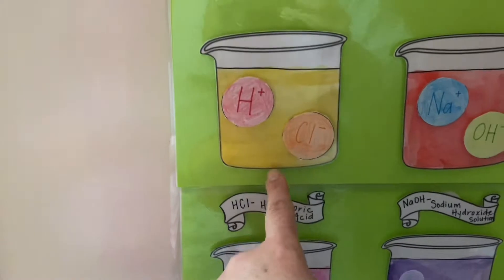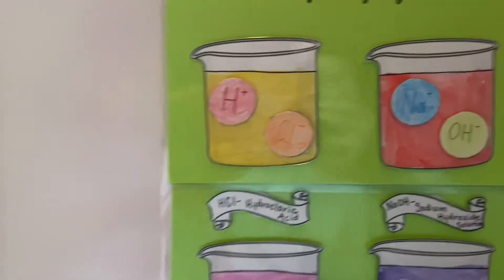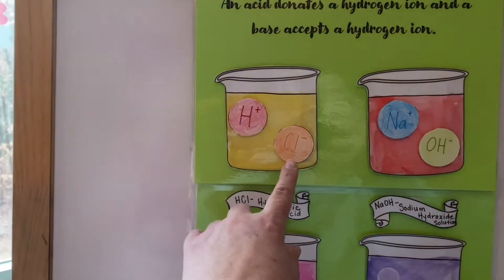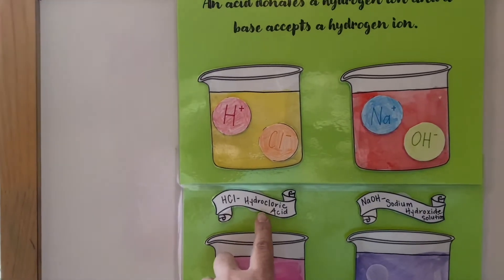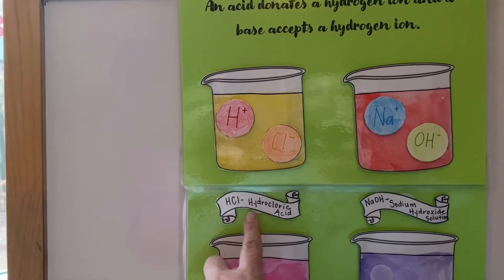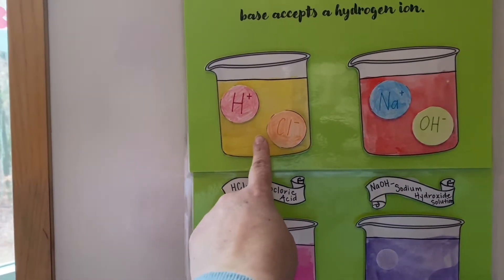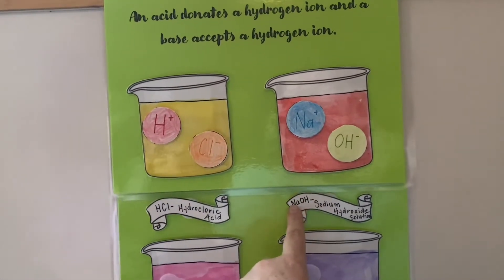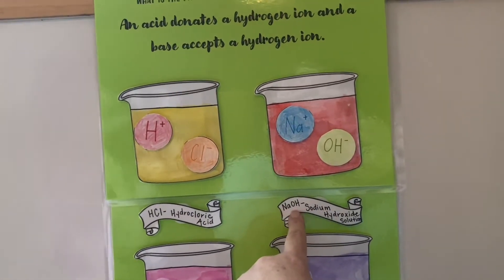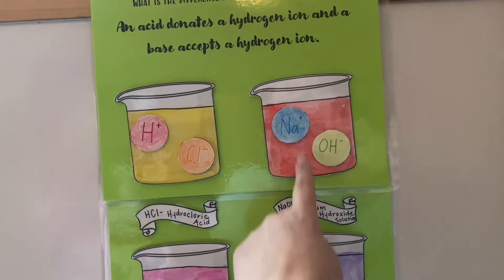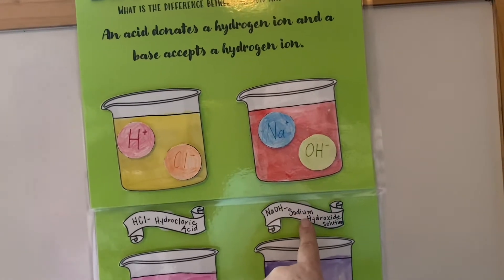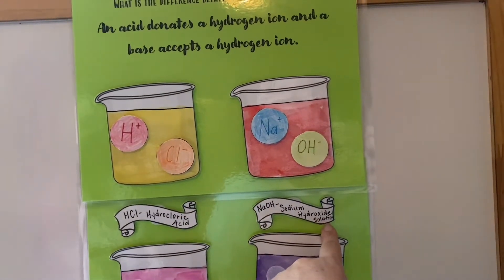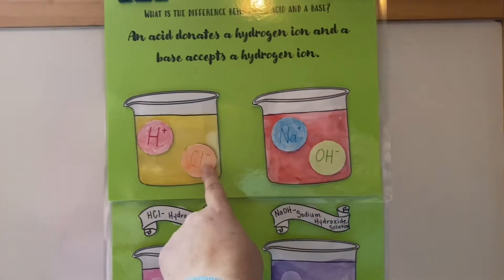So an acid — I wanted to point this out — right here we have HCl. This is a particular acid called hydrochloric acid. And then in this beaker we have NaOH.